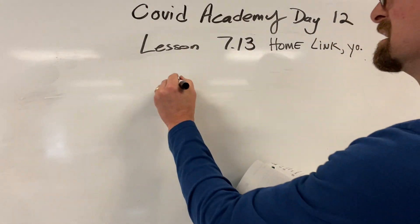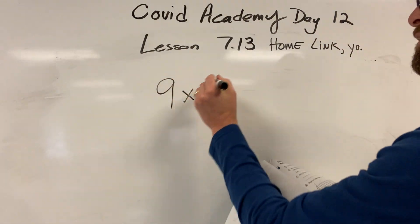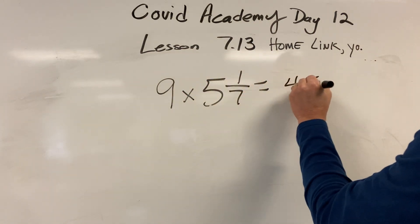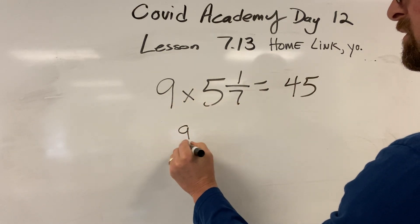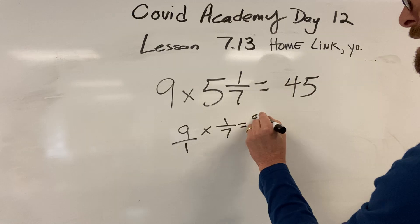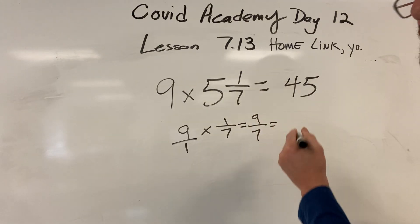Number 8: 9 times 5 and 1 seventh. This is a good problem. 9 times 5 is 45. 9 times a seventh—put that over 1—you get 9 sevenths. Well, that's not very hard. You can figure this out.